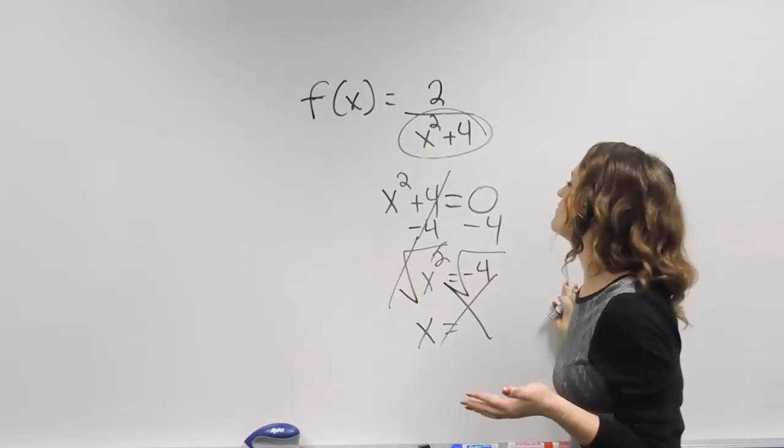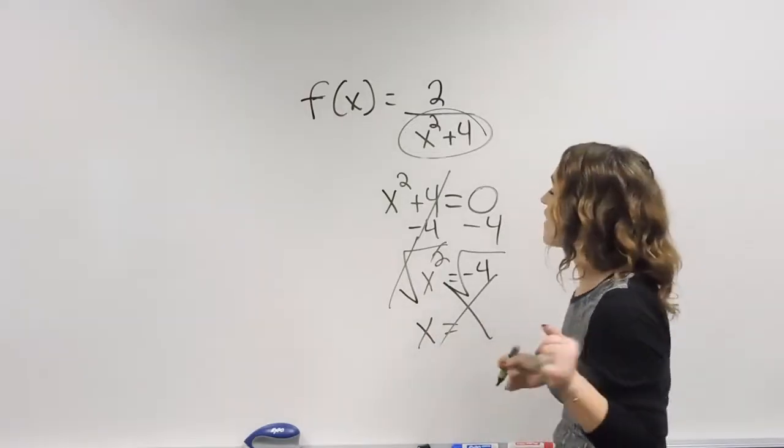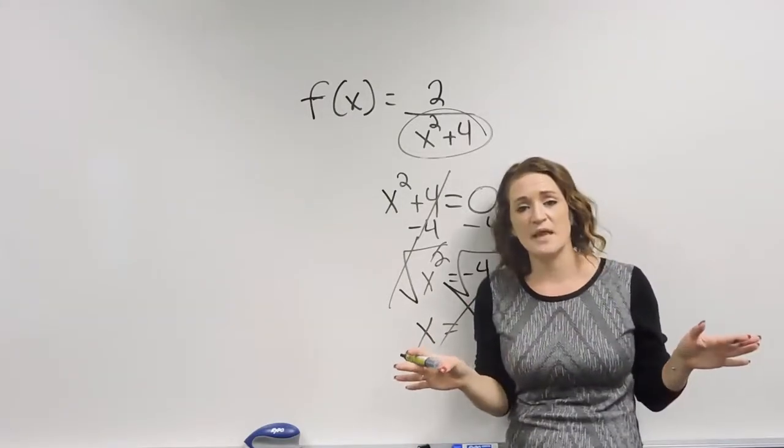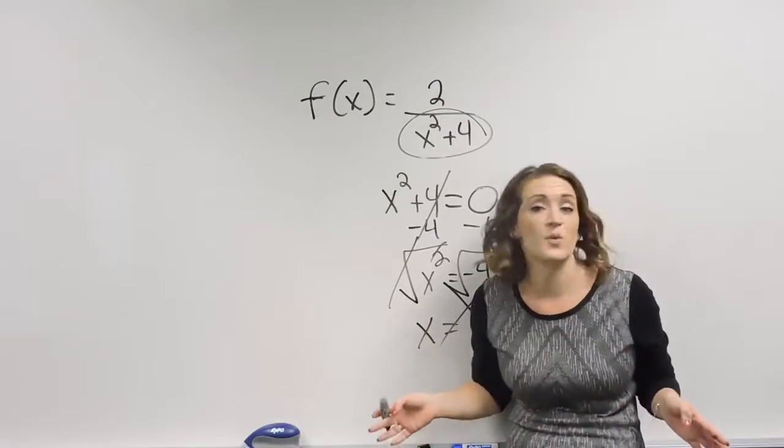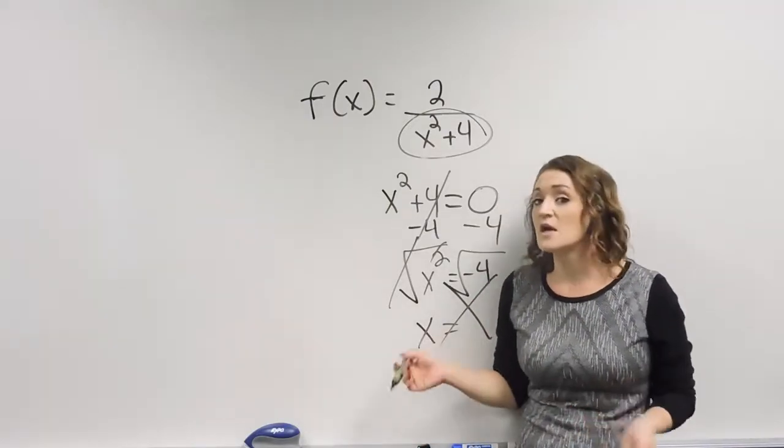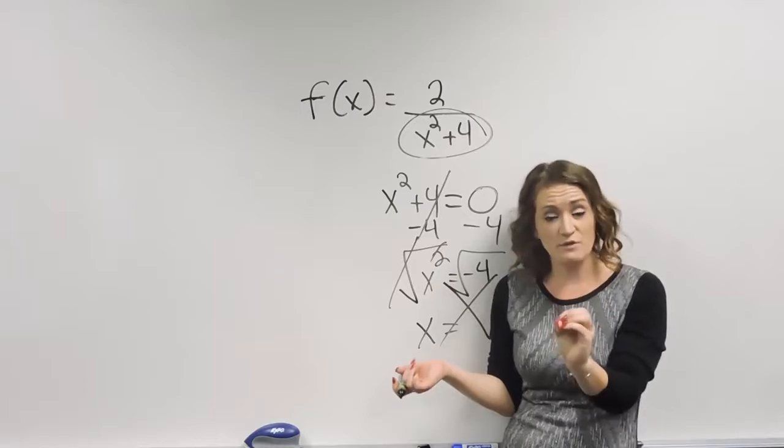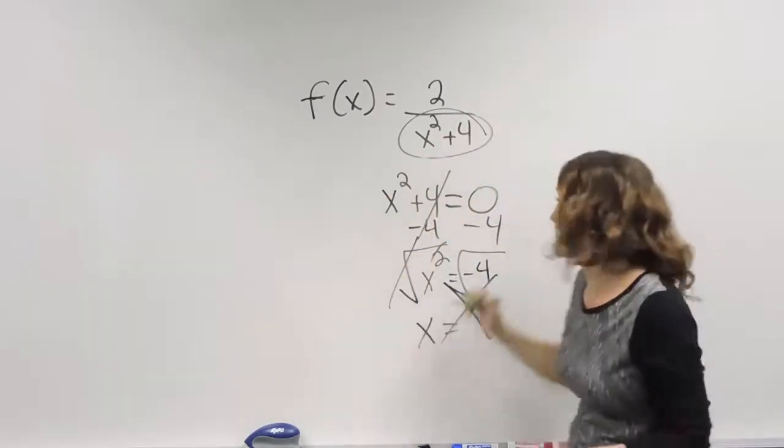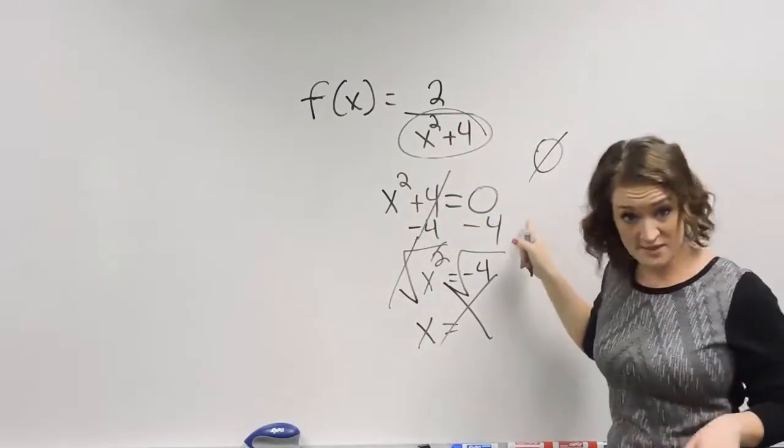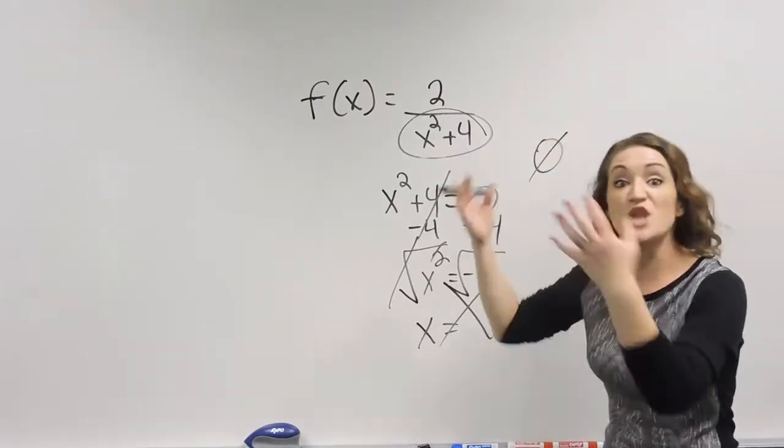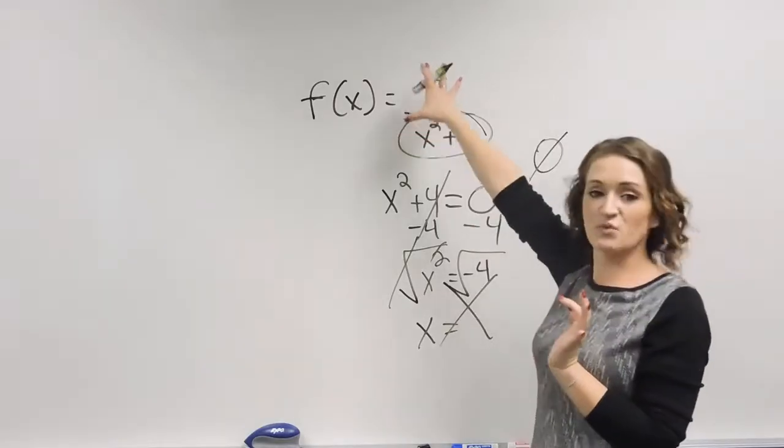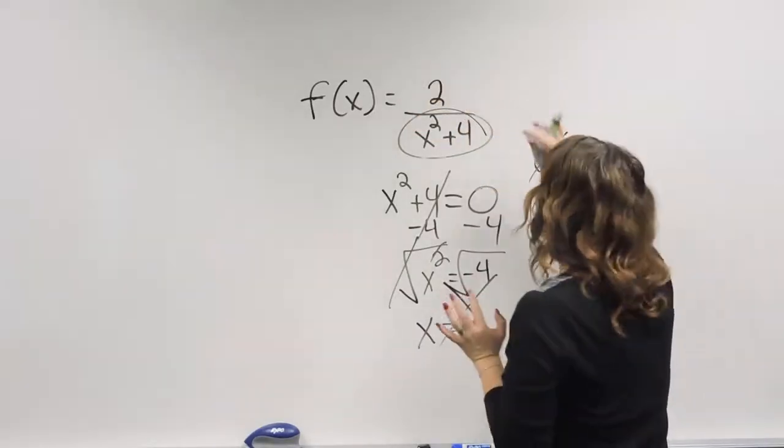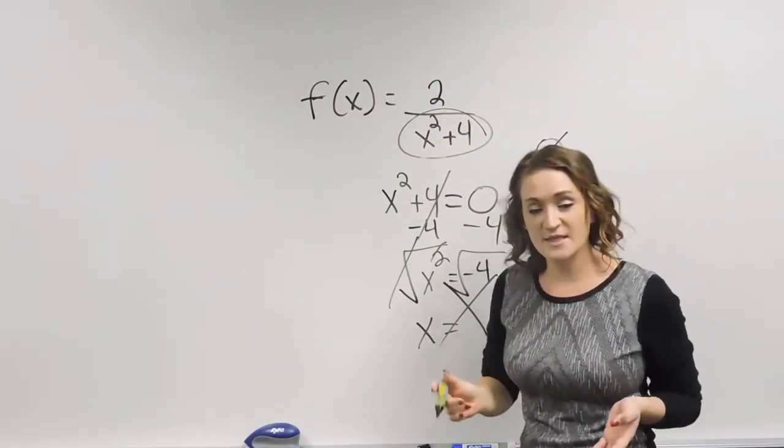So if this is never going to be 0, then as far as find all values that make the rational expression undefined, there's nothing that will make the rational expression undefined. Not a 0, 0 is an actual value. Literally nothing. So maybe you can state the empty set. That's nothing. There's absolutely nothing that would make this rational expression undefined.